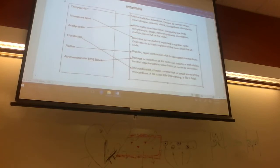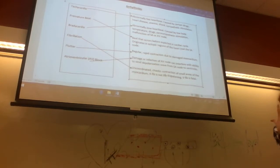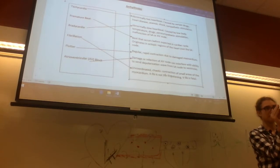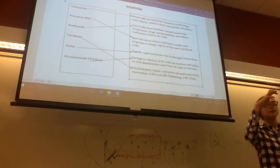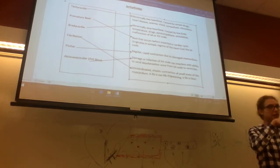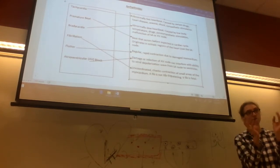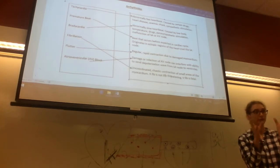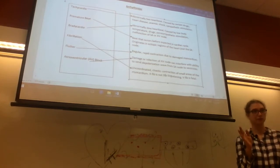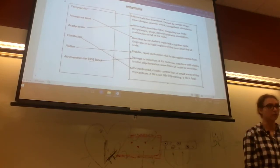Fibrillation is an uncoordinated, chaotic contraction of small areas of the myocardium. The key takeaway: atrial fibrillation is not life-threatening, but ventricular fibrillation is. With ventricular fibrillation, the ventricles aren't filling properly with blood, so you're not getting nearly enough blood to the rest of your body — V-fib is life-threatening. Atrial fibrillation is less dangerous because blood doesn't have far to travel — it just needs to get from the atria to the ventricles.